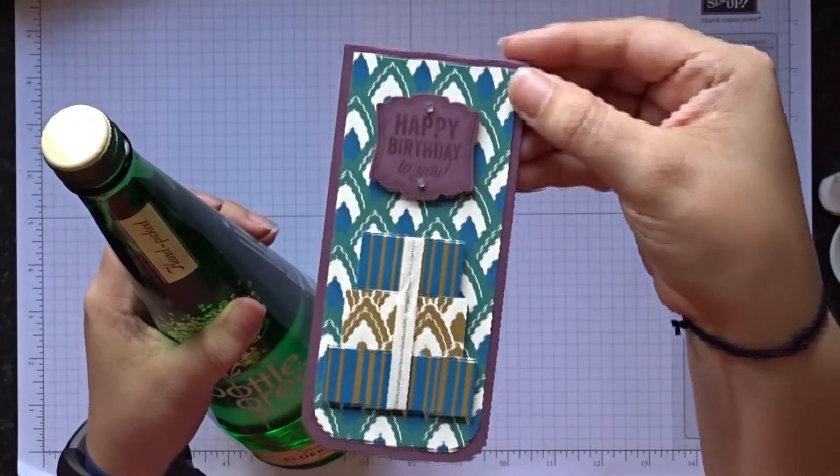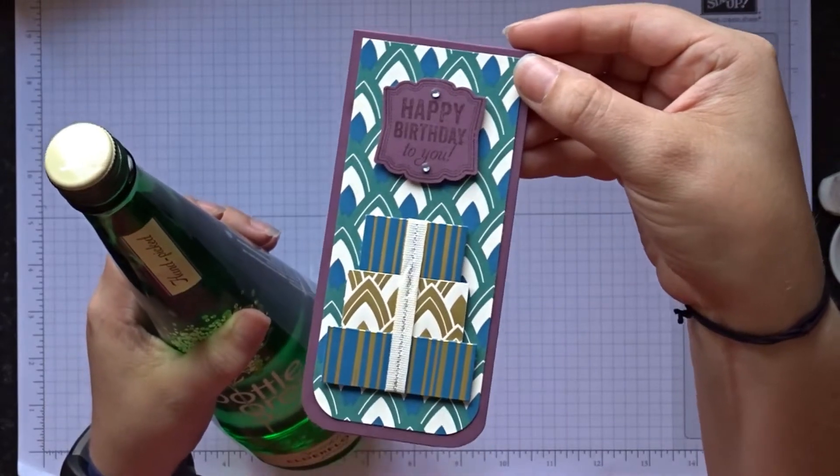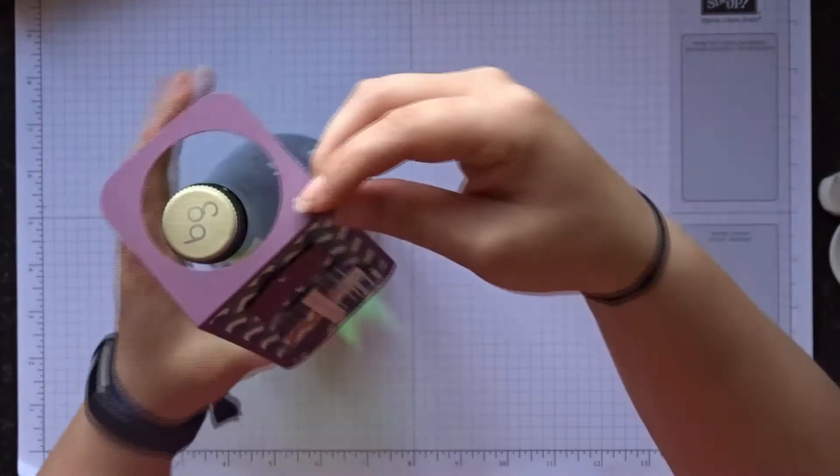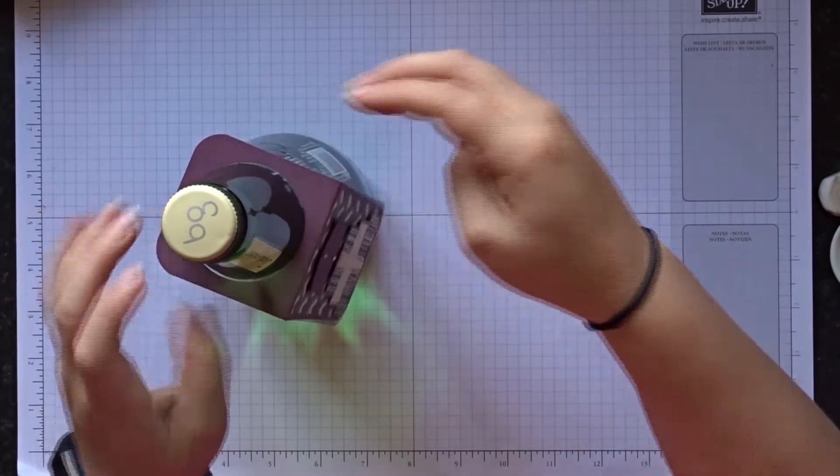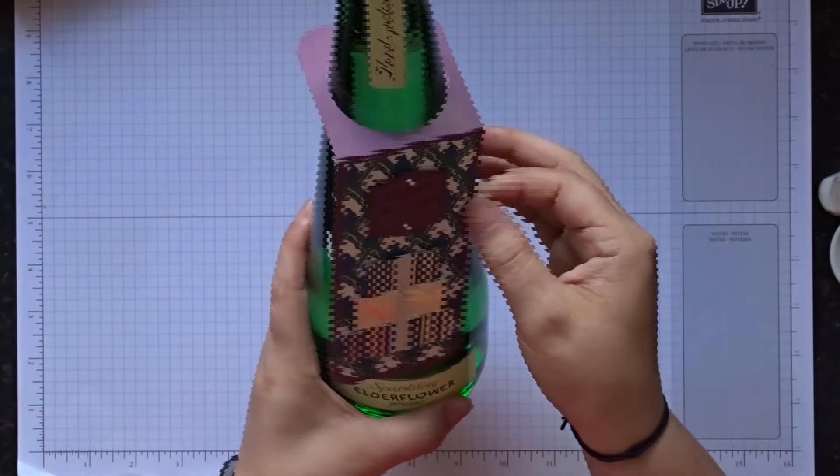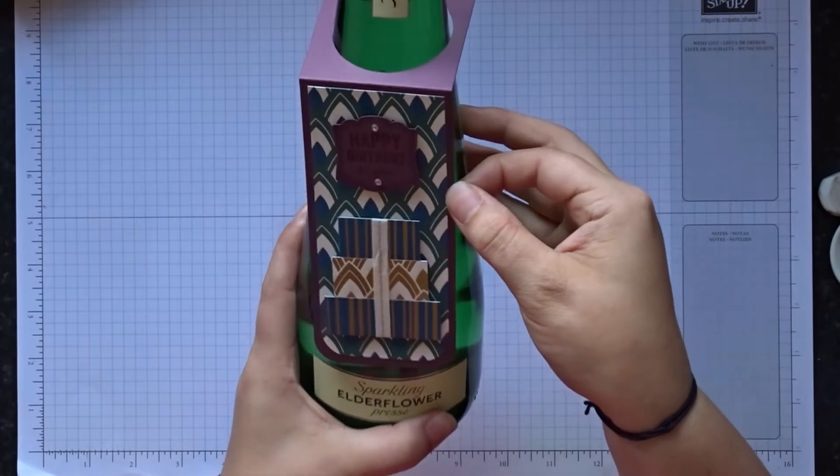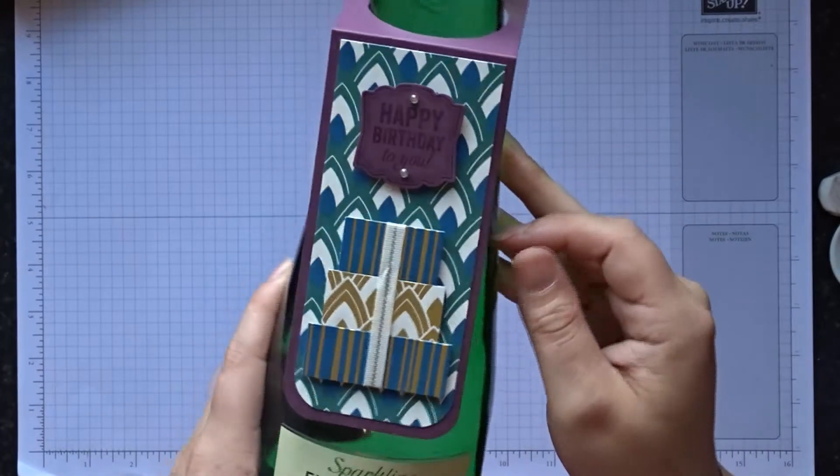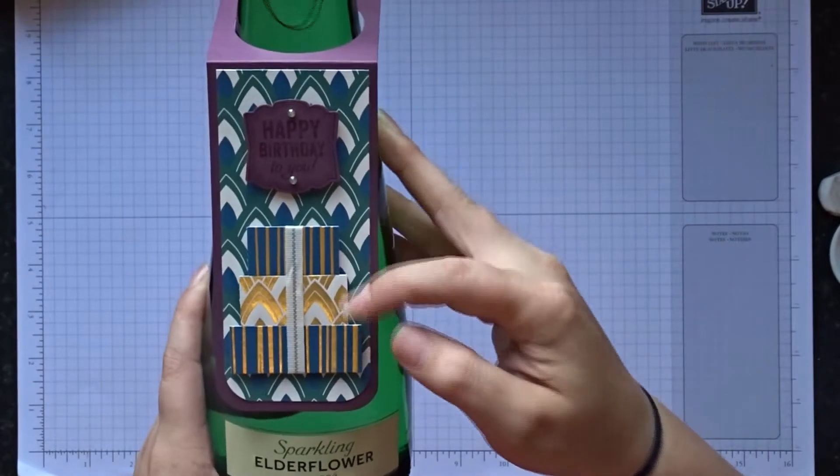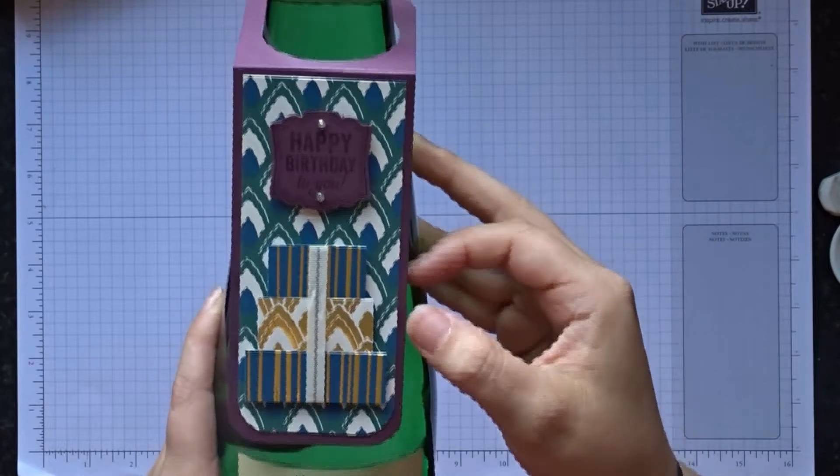So hopefully the colors are coming up there. Absolutely beautiful using the new Eastern Palace collection, some of their papers. It just fits directly over the bottle and lines up beautifully. This is for birthday so I've got a happy birthday and I've made a little birthday cake shape on there.